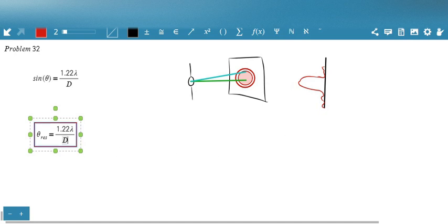Or the minimum angular distance at which two objects could be resolved. Notice that here, from this Airy's disk setup, as theta goes to 0, for small angles, sine of theta is equal to theta. So these equations are very, very close.